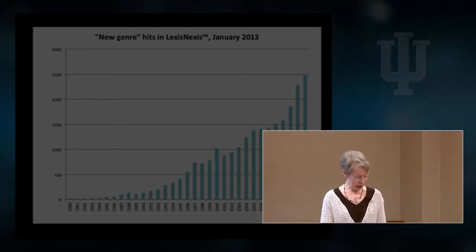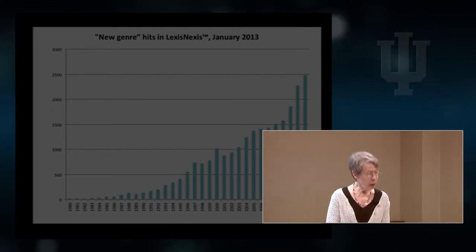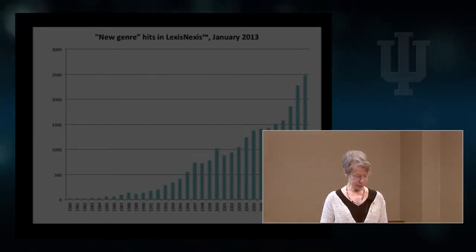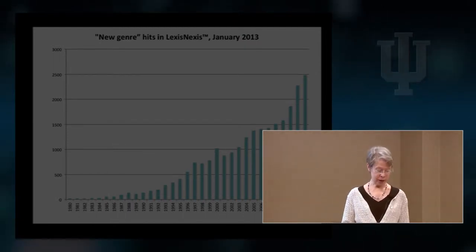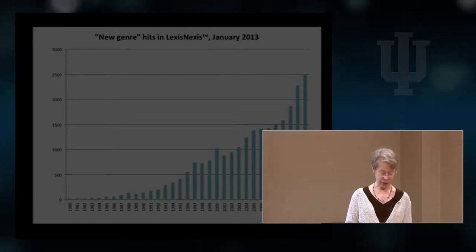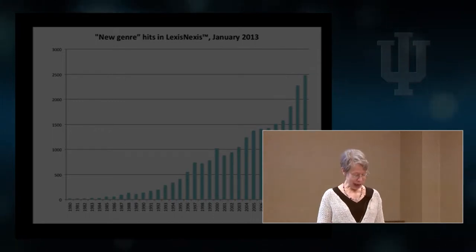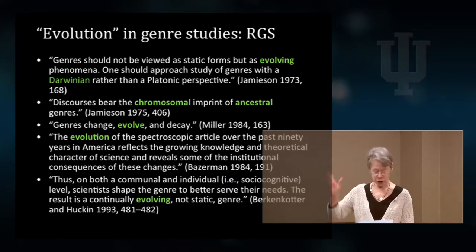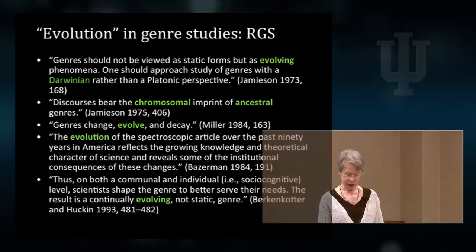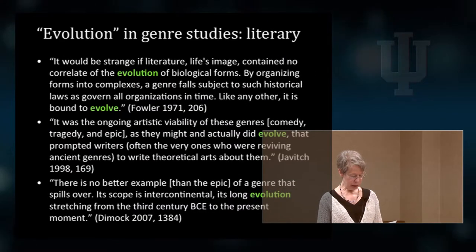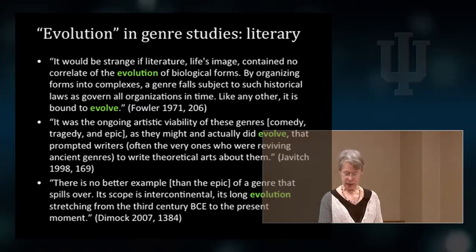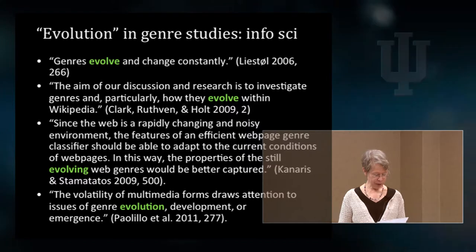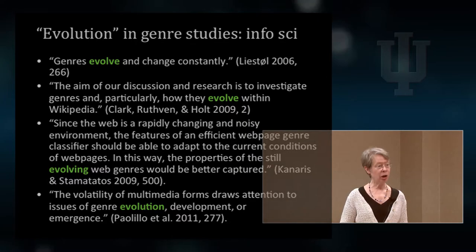In trying to understand the process of genre change and the emergence of what seem to be new genres in both new and old media, we have come to rely heavily on the concept of evolution. This is a term that is usually associated with biological change and diversity, so we might ask whether it's appropriate to use it in talking about social and discursive change. What work does it do and what work does it keep us from doing? In fact, we don't seem to have any other language for describing how genres change over time.